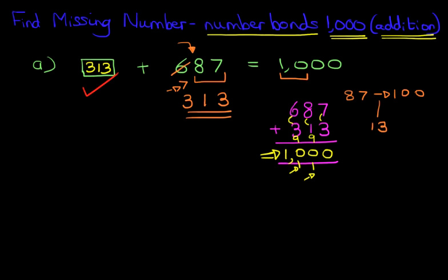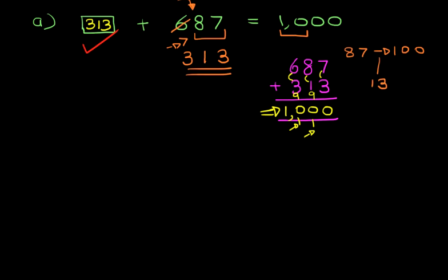It's nice and simple and you can always double check. I'm just going to scroll down so we have a bit more space to work through a second example. This time we've got 721 plus something equals 1,000. Let's have a look at the number we're beginning with, 721.